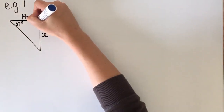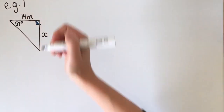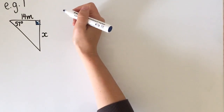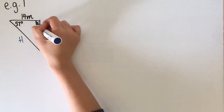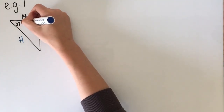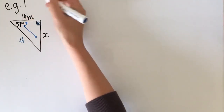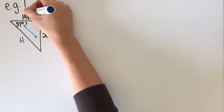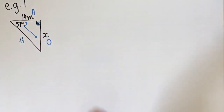I always do the hypotenuse first, even if I know I don't need it, because it helps me make sure I'm doing the other ones correctly. This is the hypotenuse because it's across from the right angle. I've got a side that's close and a side that's far, so this is A for adjacent and this is O for opposite.